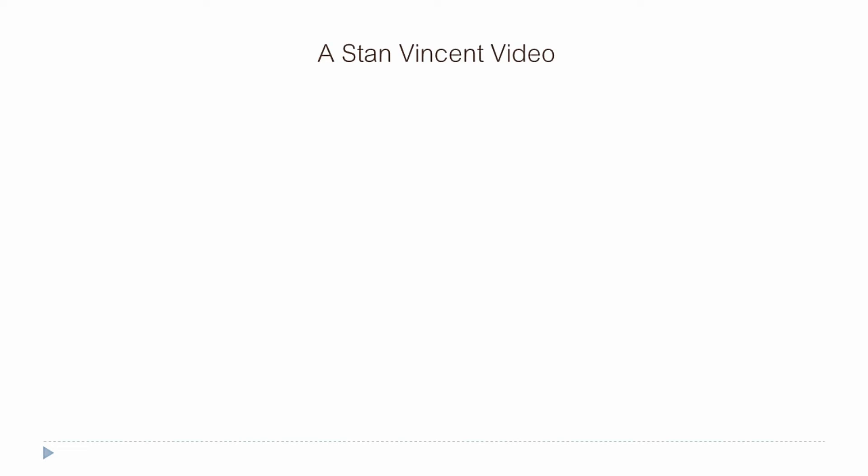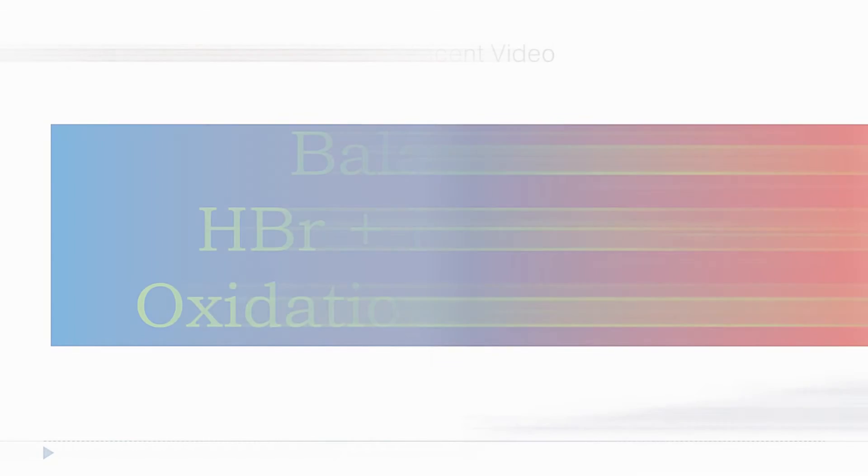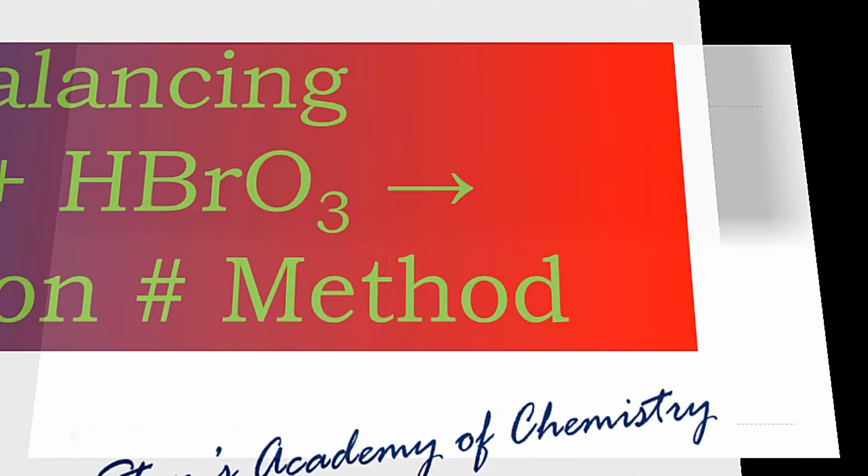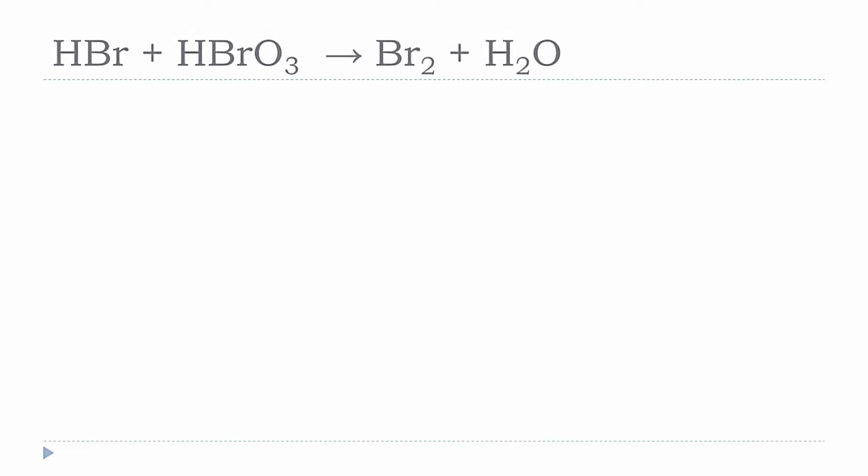In this video I will be showing you how to balance an equation using the oxidation number method. The example I have chosen is a reaction between HBr and HBrO3, that is hydrogen bromide and hydrogen bromate.